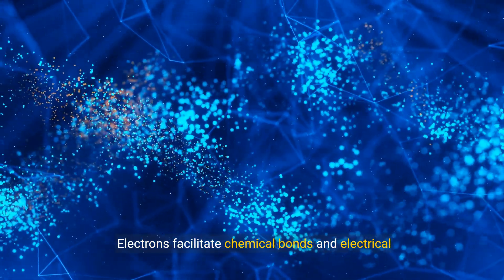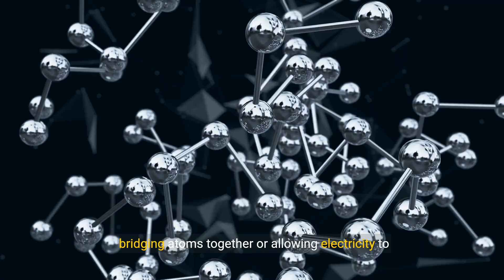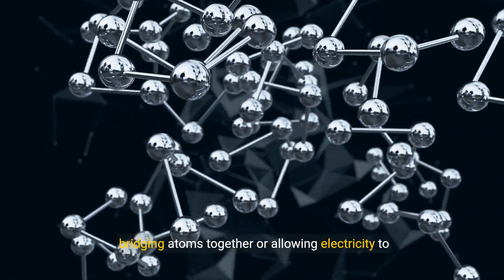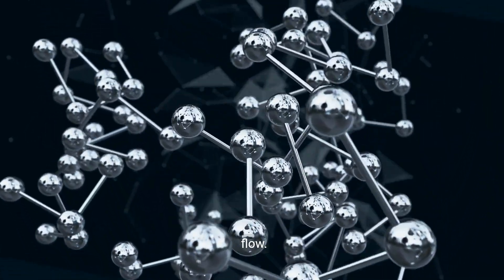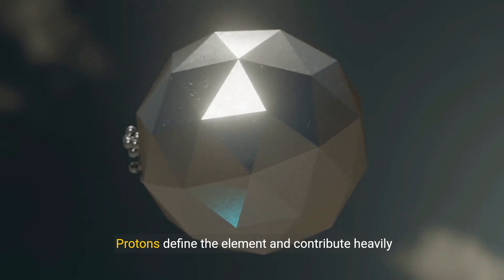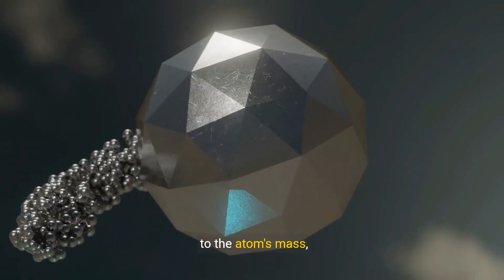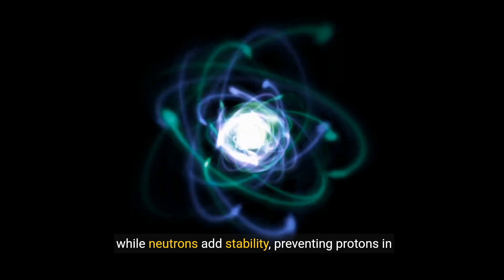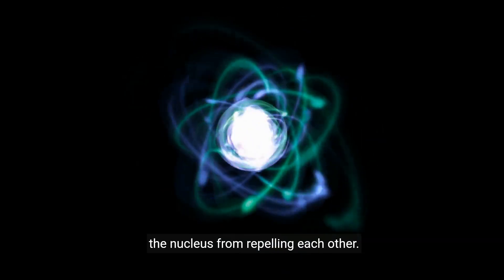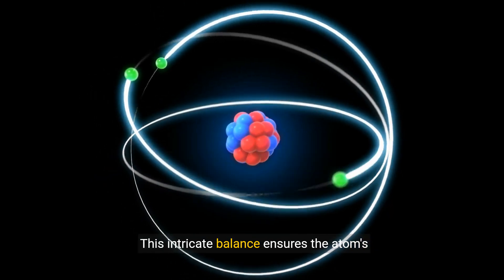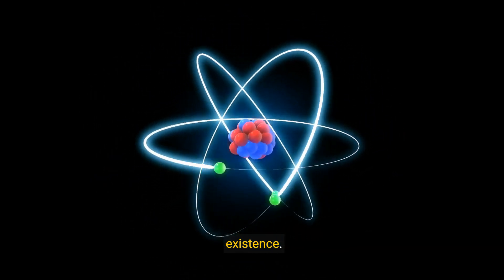Electrons facilitate chemical bonds and electrical conductance, bridging atoms together or allowing electricity to flow. Protons define the element and contribute heavily to the atom's mass, while neutrons add stability, preventing protons in the nucleus from repelling each other. This intricate balance ensures the atom's existence.